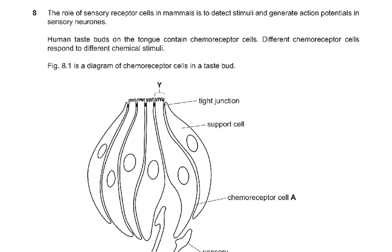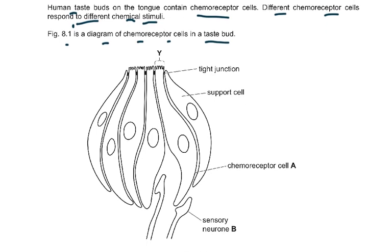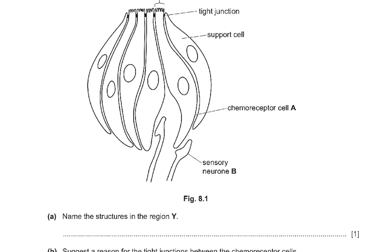The role of sensory receptor cells in mammals is to detect stimuli and generate action potentials in sensory neurons. Human taste buds on the tongue contain chemoreceptor cells. Different chemoreceptor cells respond to different chemical stimuli. Figure 8.1 is a diagram of a chemoreceptor cell in a taste bud. You can see the tight junctions, then region Y, then support cell, then chemoreceptor cell A, and then sensory neuron B.